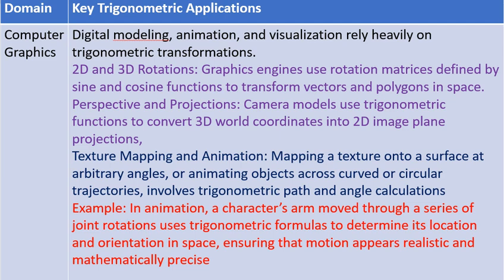In Computer Graphics Engineering, digital modeling, animation, and visualization rely heavily on trigonometric transformations. Graphics engines use rotation matrices defined by sine and cosine functions to transform vectors and polygons in space. Camera models use trigonometric functions to convert 3D world coordinates into 2D image plane projections. In animation, a character's arm moved through a series of joint rotations uses trigonometric formulas to determine its location and orientation in space.